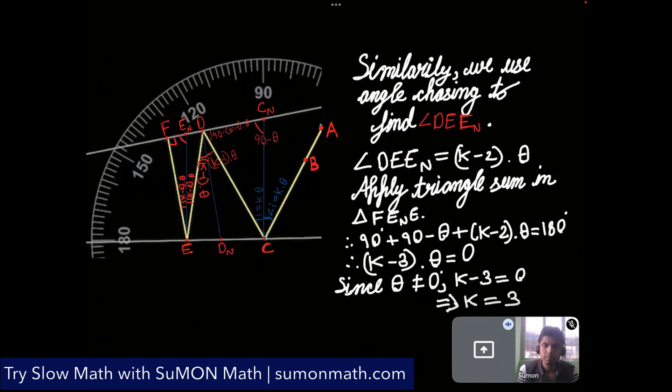Again using angle chasing, we will find the last angle of incidence which comes out to be k minus 2 into theta. So now we basically apply the triangle sum in the triangle fen and en. So when we do the triangle sum, we will get 90 degree plus 90 minus theta plus k minus 2 into theta is equal to 180 degree. So finally we will get k is equal to 3.